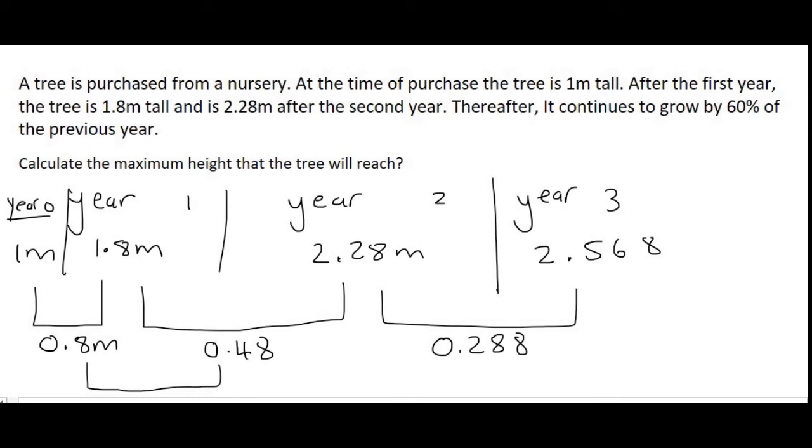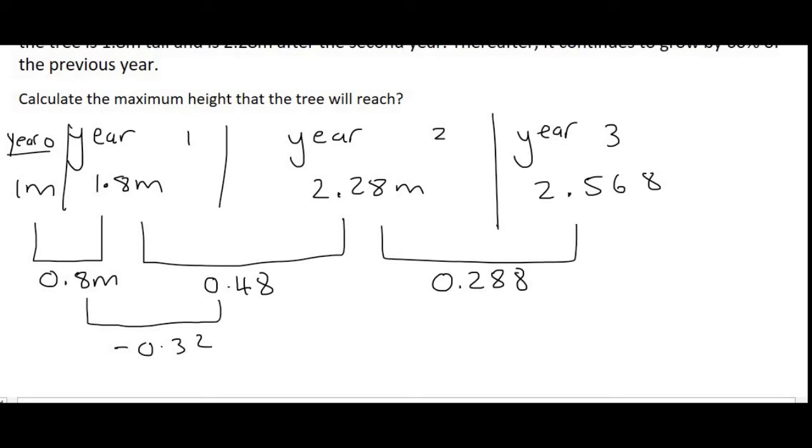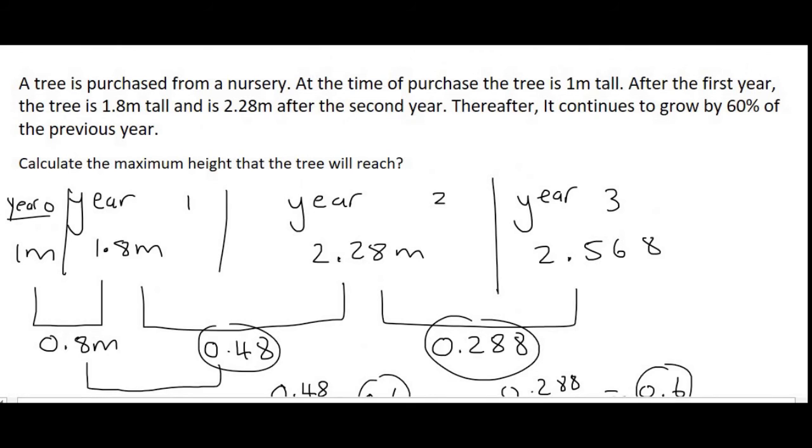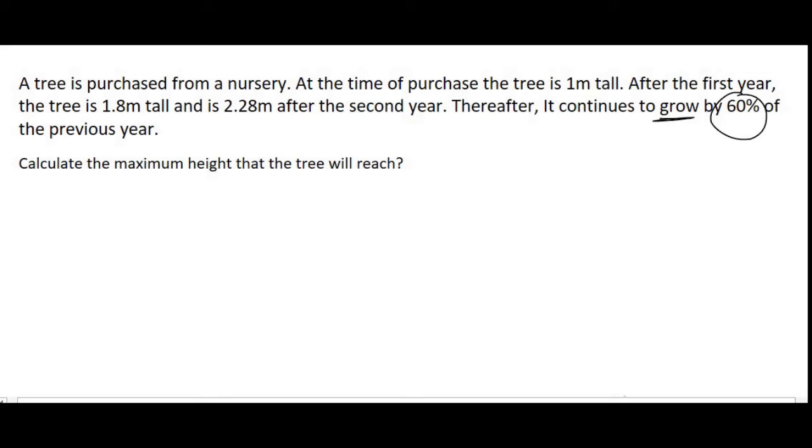Let's take a look. To get from 0.8 to 0.48, we could be minusing by 0.32, or there might be a ratio. Now the ratio is always the second term divided by the first term. And that's going to give us 0.6. If we then look at the ratio for the next term, which is 0.288 divided by 0.48, it also gives us 0.6. So there we have the ratio. The ratio is in the growth of the tree, not the total height of the tree. And that makes sense. They said that it continues to grow by 60% of the previous year.